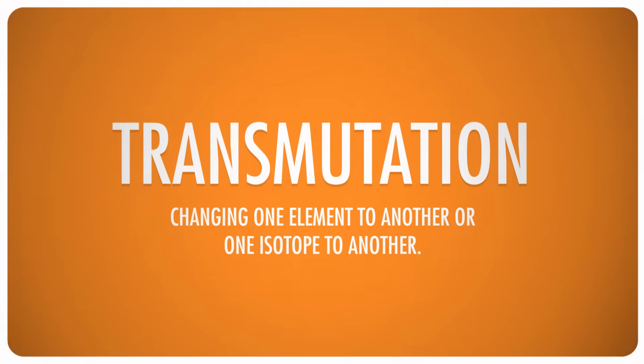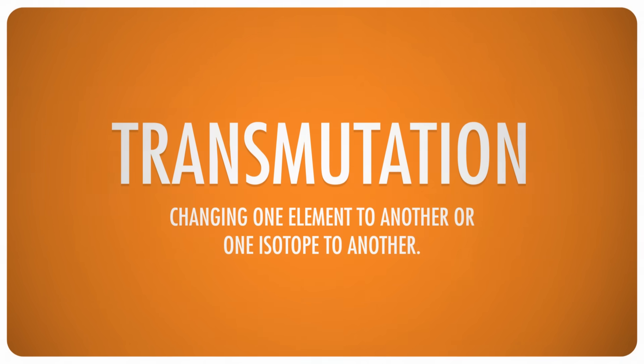Both of these kinds of changes, changing one element to another, or changing one isotope to another, are known as transmutation. And it is, indeed, possible to transmute lead to gold.